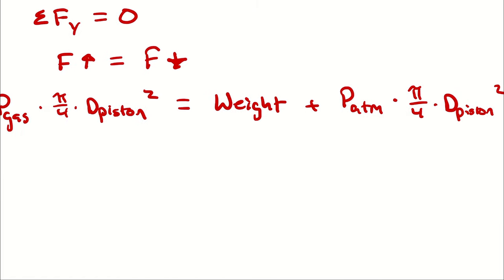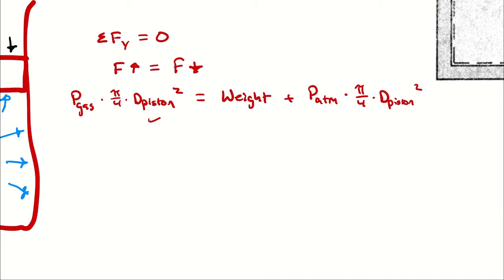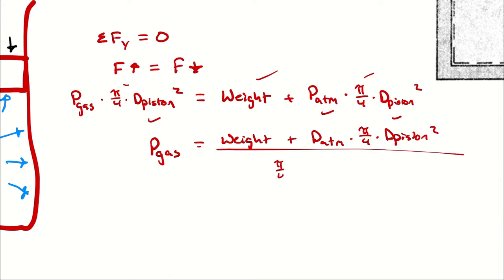In this equation, we know the diameter of the piston, we know atmospheric pressure, we know pi, we know the weight of the weight, therefore the only unknown is p gas. So I will write p gas as being equal to the weight of the weight plus atmospheric pressure times pi over 4 times the diameter of the piston squared, and divide by pi over 4 times the diameter of the piston squared.